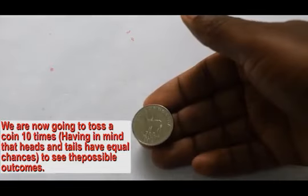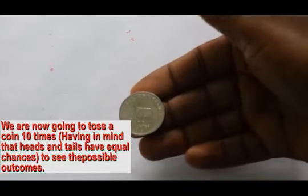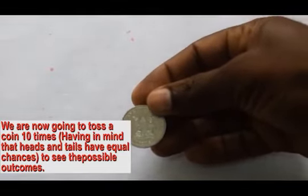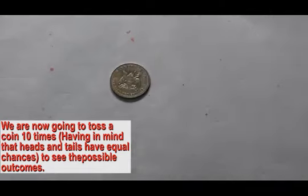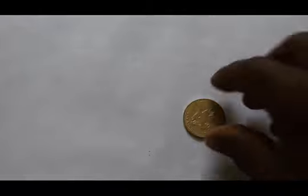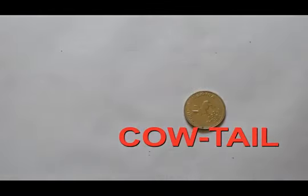We shall obtain a coin showing the two sides, that is the coat of arms and a cow. We then let the coat of arms represent the head and the cow side represent the tail.